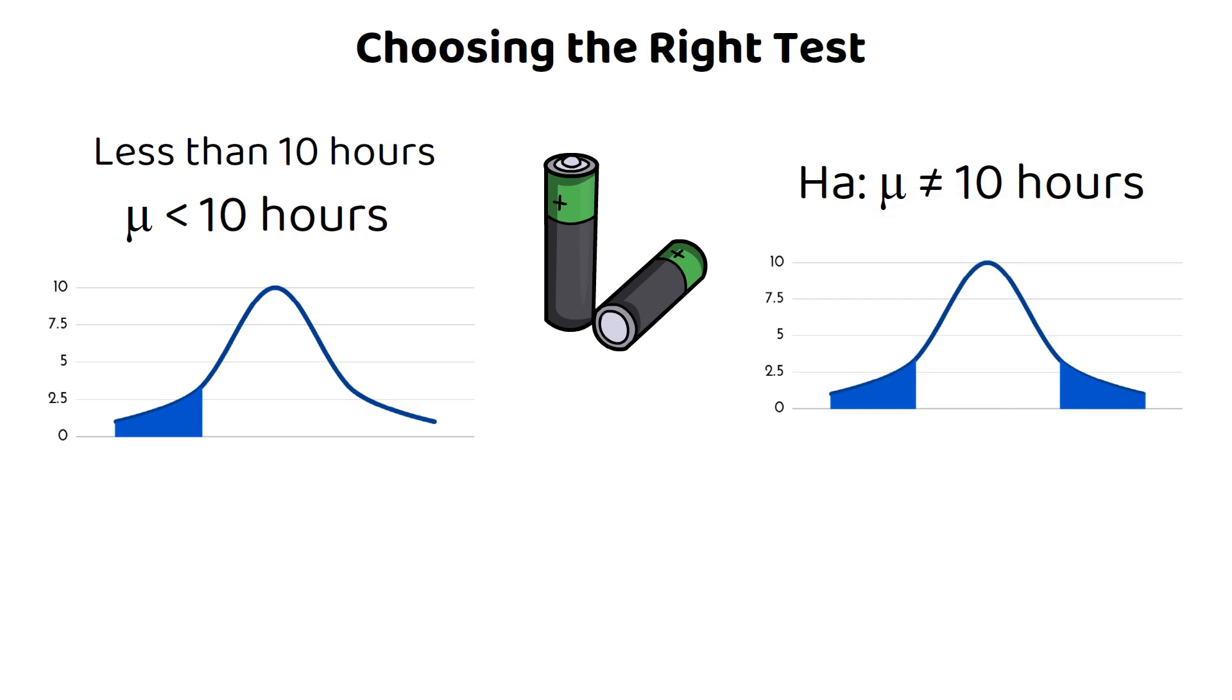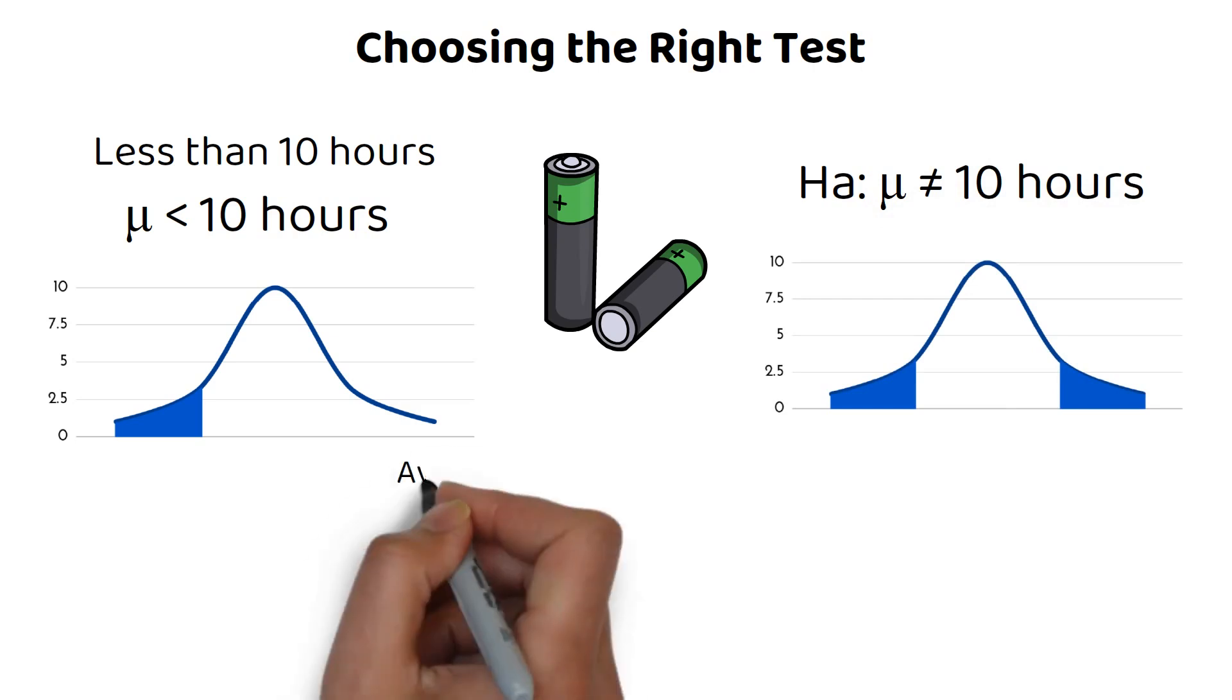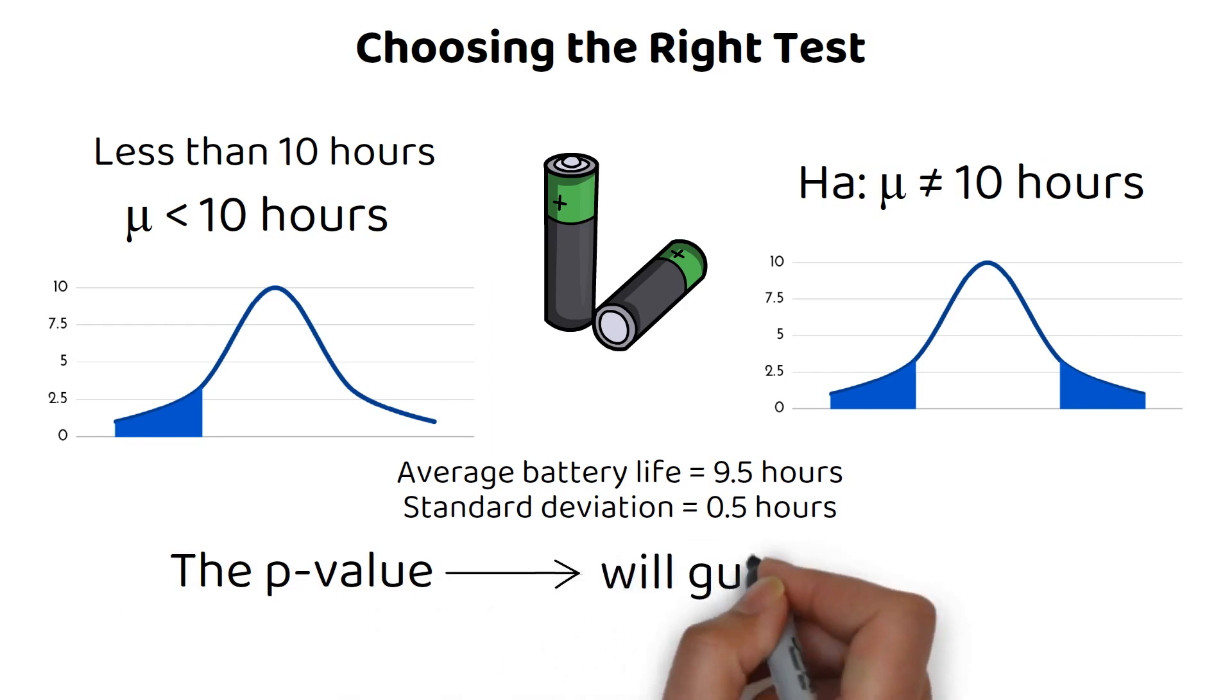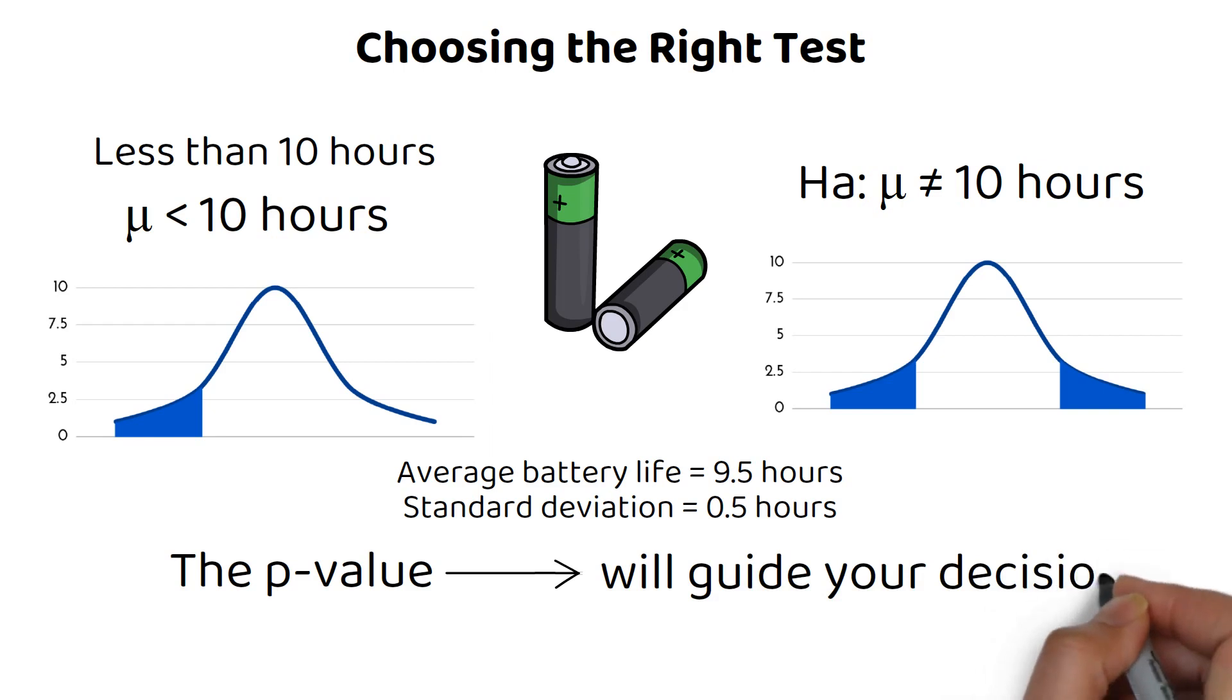Imagine you gathered data and find that, based on your sample, the average battery life is 9.5 hours, with a standard deviation of 0.5 hours. You'd then compute a test statistic, which in many cases would be a Z-score, and compare it to a critical value. The p-value, which represents the probability of observing your results, or more extreme, assuming H0 is true, will guide your decision. A small p-value, typically less than alpha, would lead you to reject H0.